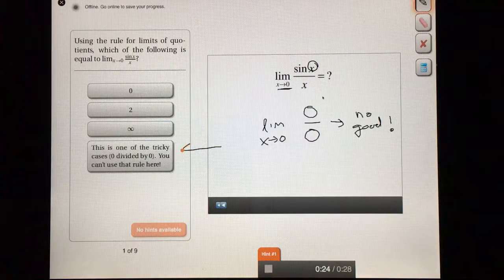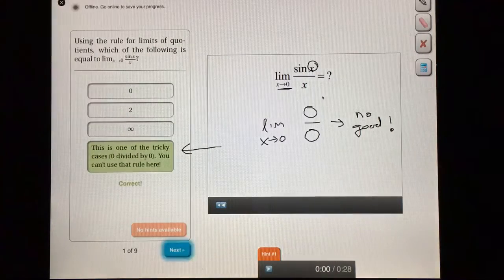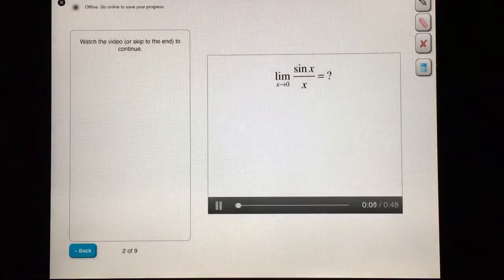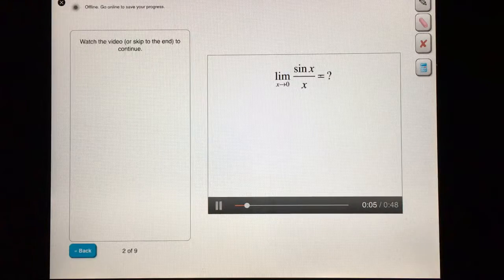So in this case, we can't use it. Right. We can't use that quotient rule here, because this limit is of the form 0 divided by 0.